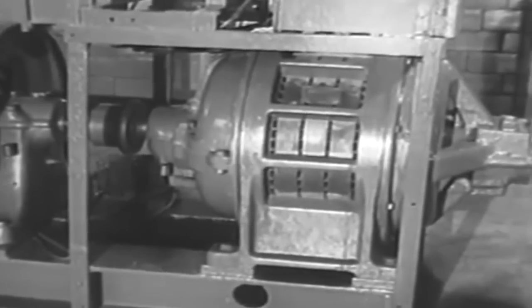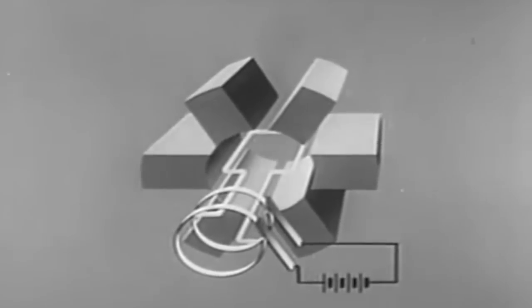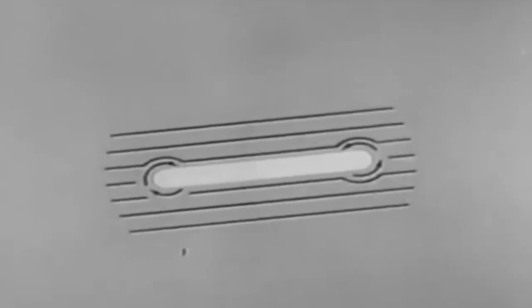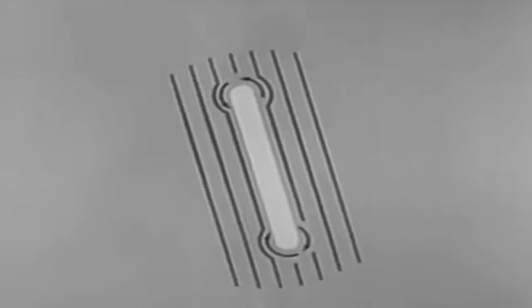In synchronous motors, there is no need for relative motion. The EMF needed for the rotor is supplied from an outside DC source. Here, the rotor and the revolving field rotate at the same speed.